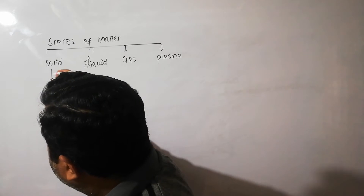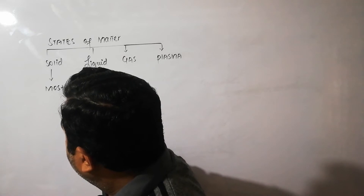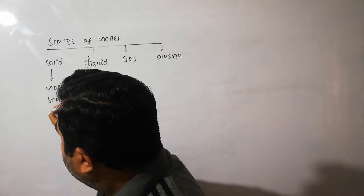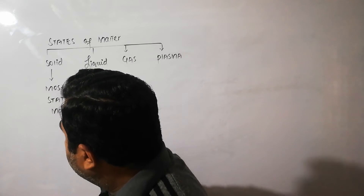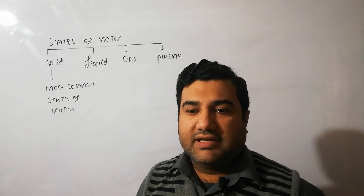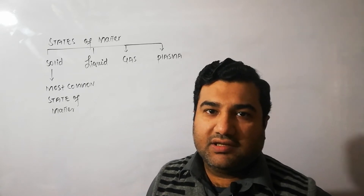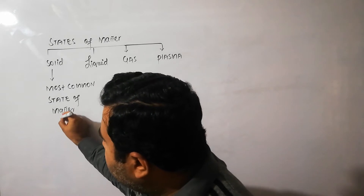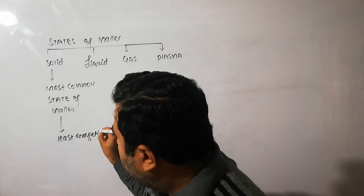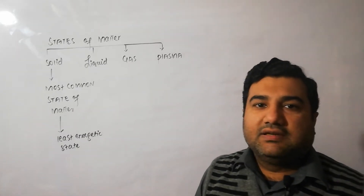Solid is the most common state of matter, meaning most species are found in the solid state. For example, more than a hundred elements in the periodic table are in the solid state. Solid state is also the least energetic state — its molecules possess minimum energy.